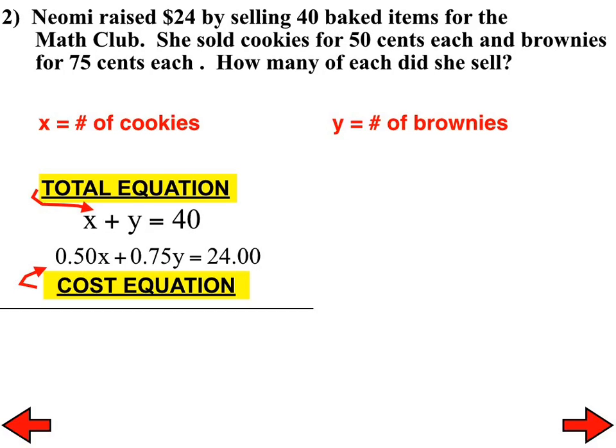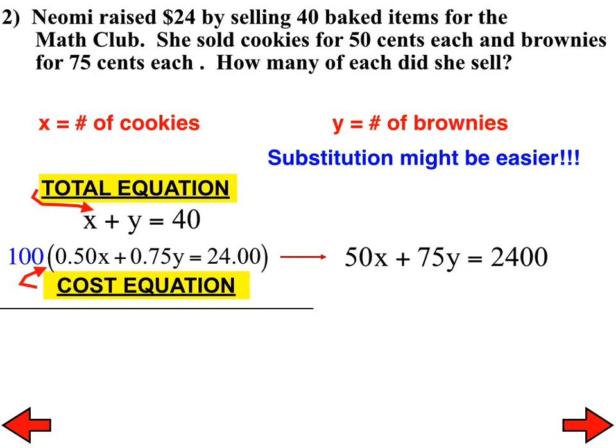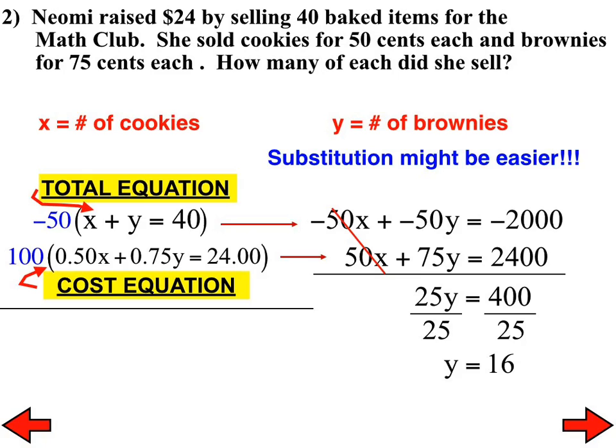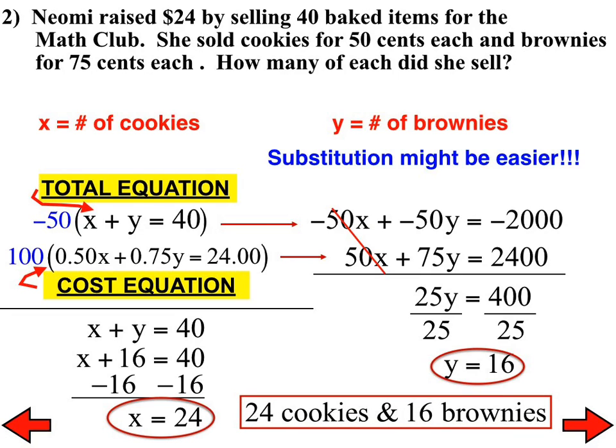Autumn, what did you get on this one? I got 24 cookies and 60 brownies. And that is what most people got on that one. Substitution might be easier, but that's entirely up to you. I'm going to, from this point on, I believe I stick with elimination method. I multiplied the bottom one by 100 to get rid of all my decimals, and I multiplied the top one by negative 50 so that my x's were eliminated. It doesn't matter whether you use substitution or elimination. Whatever works best for you. I end up with 16 brownies right there. I'm going to go back to the x plus y equals 40 to solve for the number of cookies. And obviously, there are 24 cookies and 16 brownies. Any questions with number two?